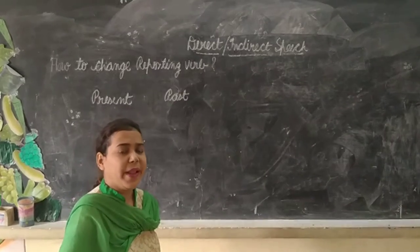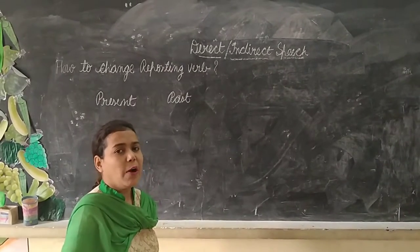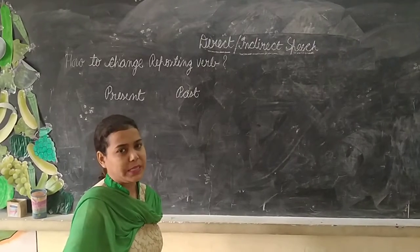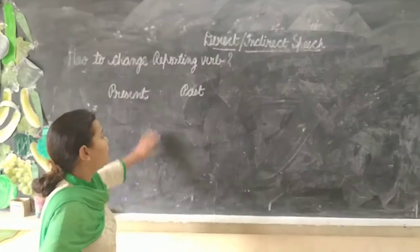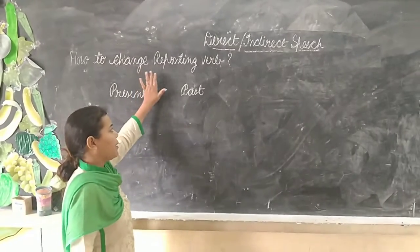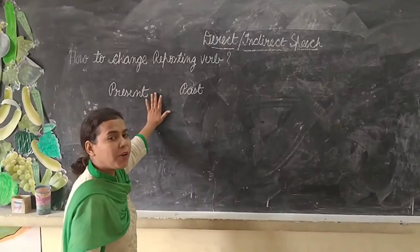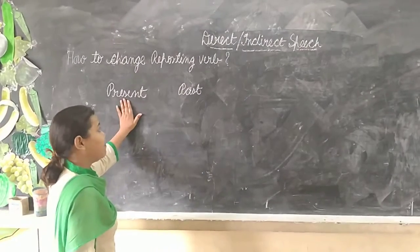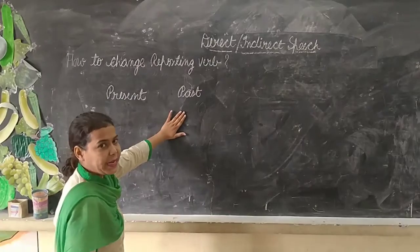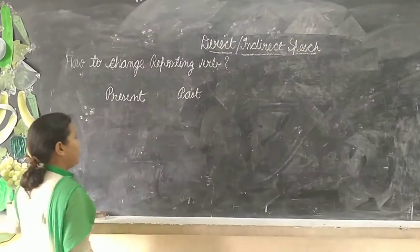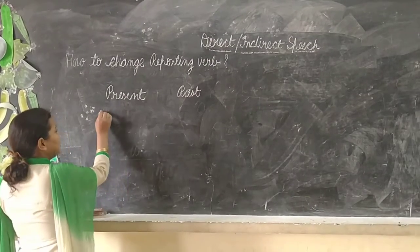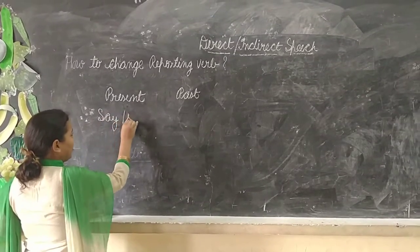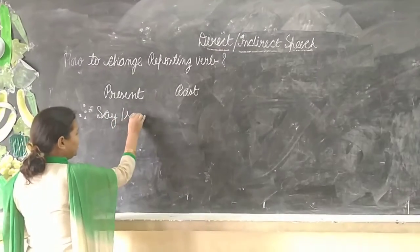Now I will explain how to change the reporting verb of direct speech. The reporting verb may be in two parts: either it may be in present or it may be in past. If it is in present, it will be 'say' or 'says'.